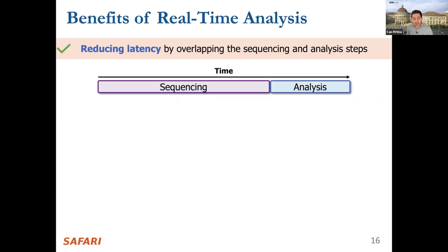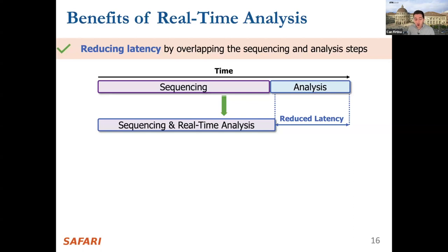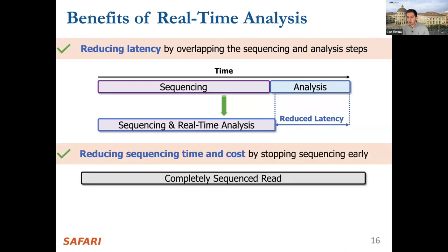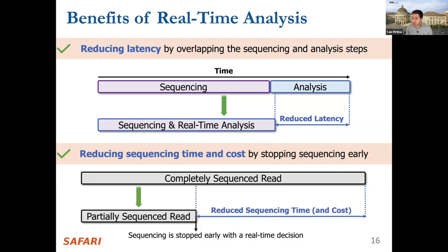Real-time analysis provides two key benefits. First, you can overlap sequencing with analysis, reducing the latency of entire genome analysis — rather than waiting for sequencing to finish before analyzing. Second, with nanopore you can partially sequence a read if it's not interesting or if sufficient bases have been sequenced, unlike other sequencers. This can significantly reduce both sequencing time and cost.